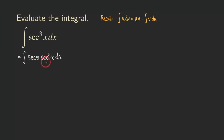First, we are going to look at this — it's a product of two functions right here: secant x, that's one function, and secant square x dx, that's another function. So what we are going to do is let u be secant x. And then we are going to let dv be secant square x dx.